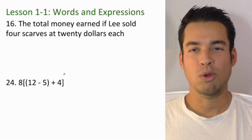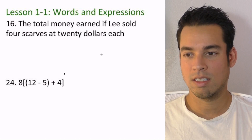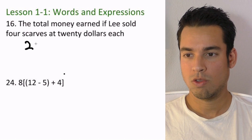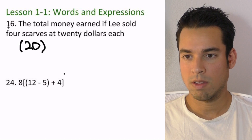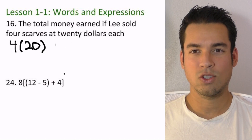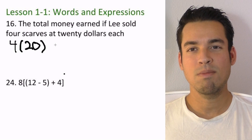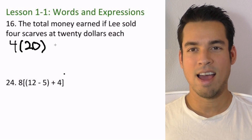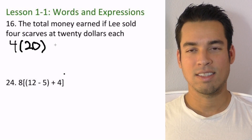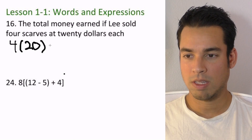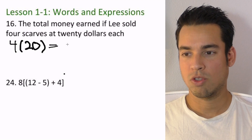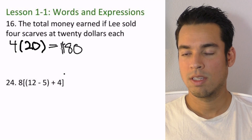Here we're trying to figure out exactly how much money he's made for selling these items. Each scarf is $20 and he sold four of them, so we're simply taking 20 and multiplying it by four. It's really important in pre-algebra to get out of the habit of using X as a symbol for multiplication, because X is going to be used as a variable. So 4 times 20 is 80 — he has made $80.